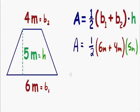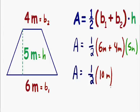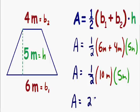Now I'm going to simplify this. Our area is equal to one-half, and inside our parentheses we have six meters plus four meters, which equals ten meters. This is still multiplied by our height of five meters. So our area is equal to one-half times ten — one-half of ten is five — and five times five is equal to twenty-five.